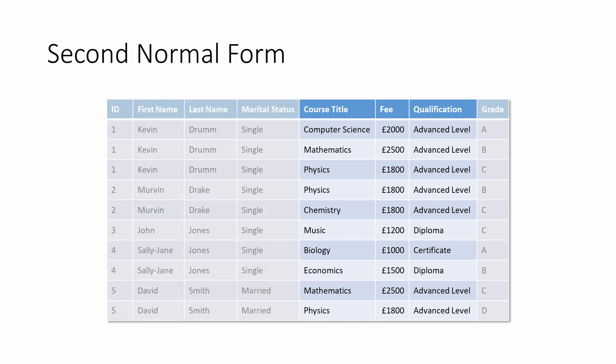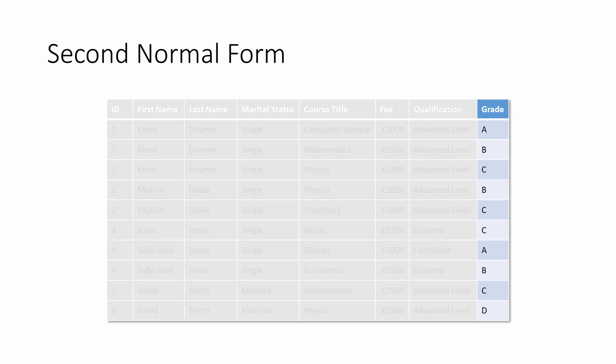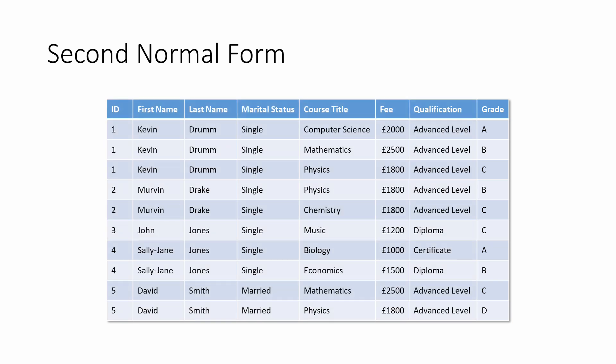And finally, this might not be immediately obvious, but this table also contains data about each student and course combination. Look at the grade column — each student has a grade for each course they attended. Kevin Drum, for example, did three courses, so he has three separate grades. Each of Kevin's grades is not just about Kevin; it's also about the course he did to achieve that grade. Each grade is partially dependent on the student and partially dependent on the course.